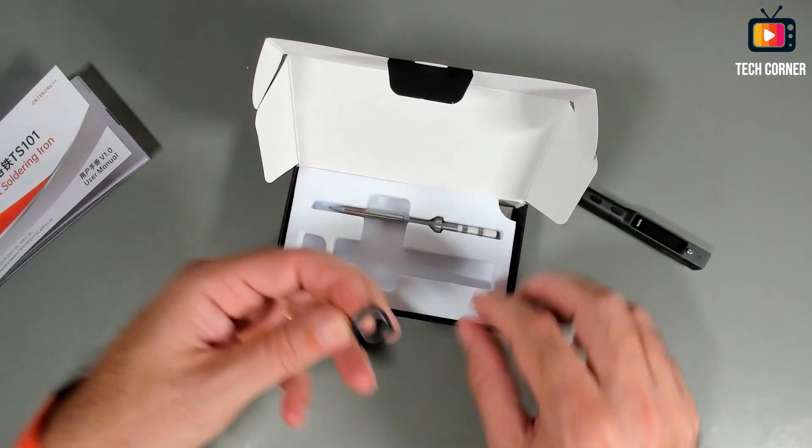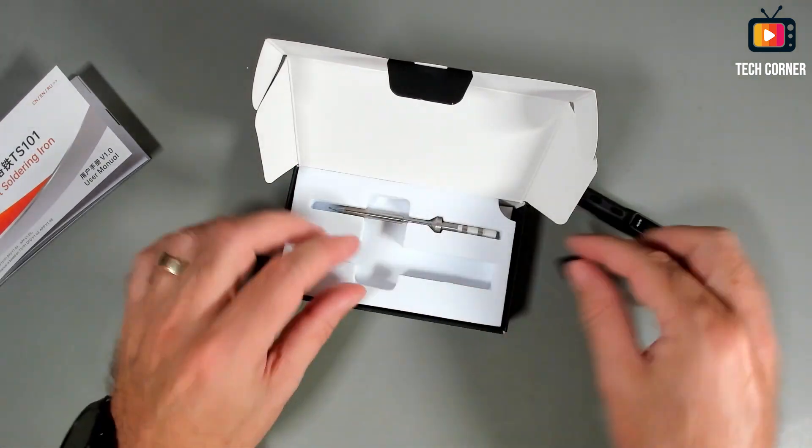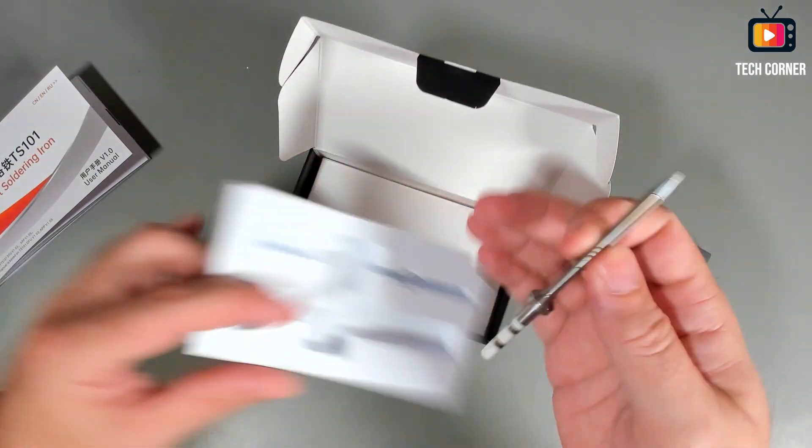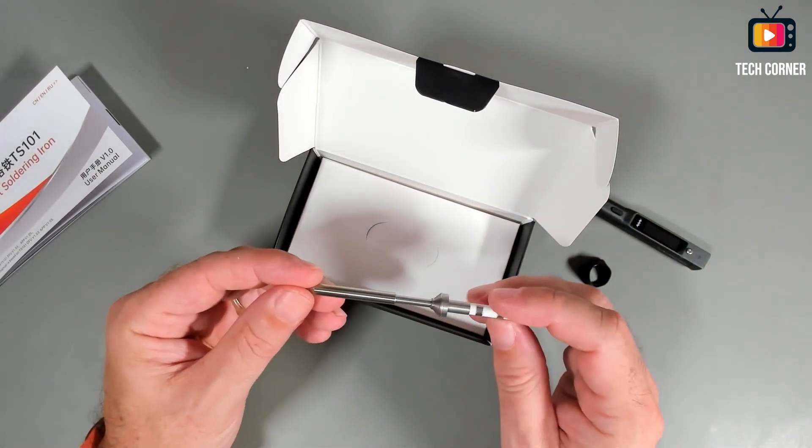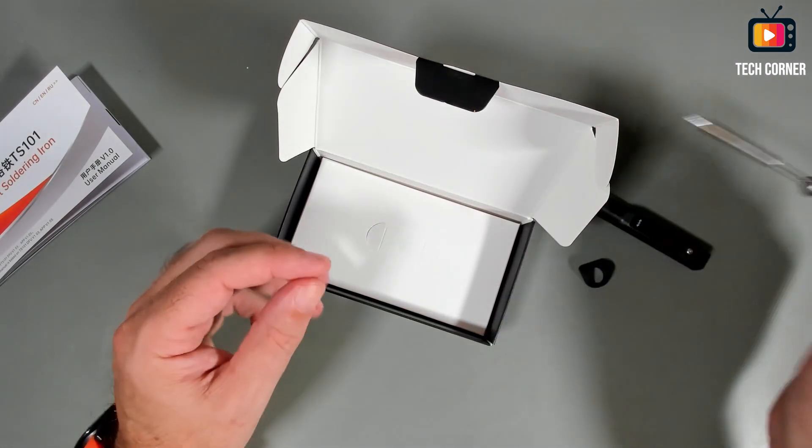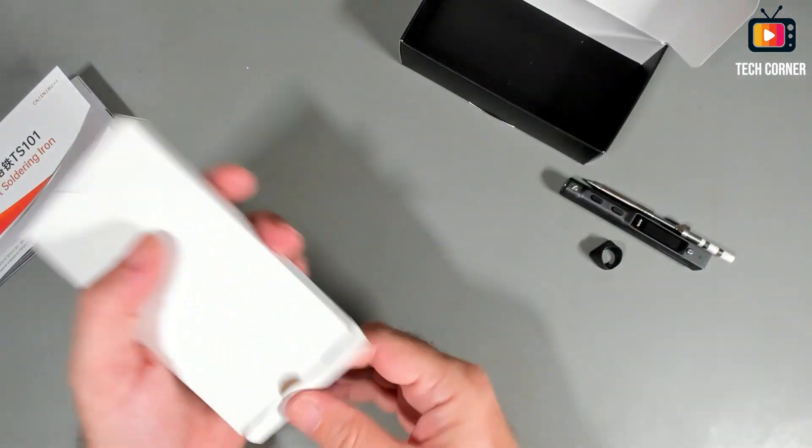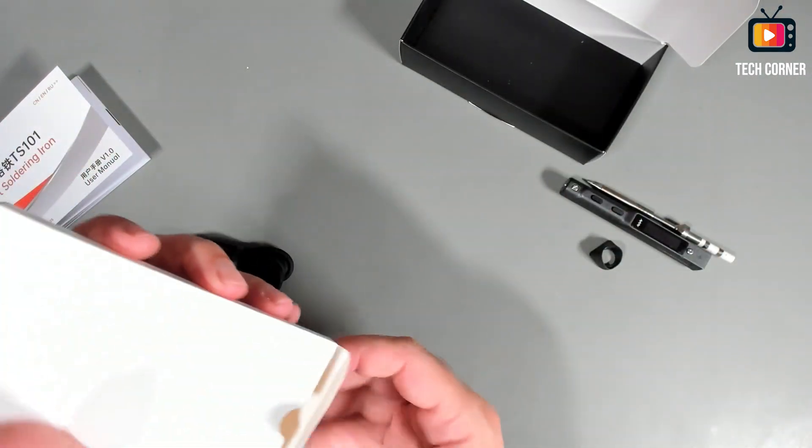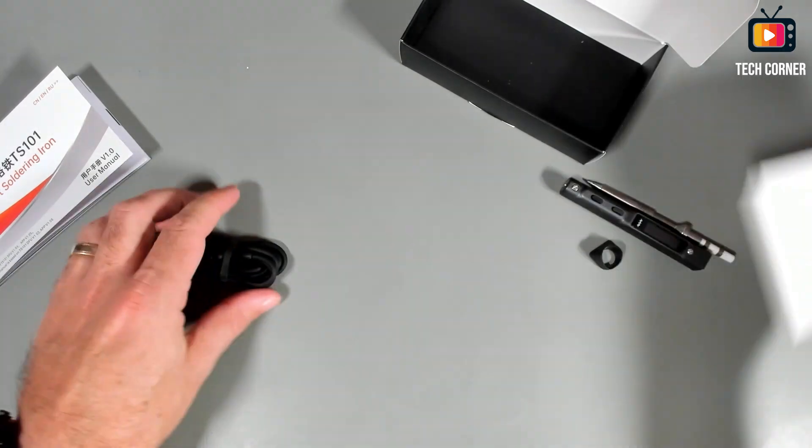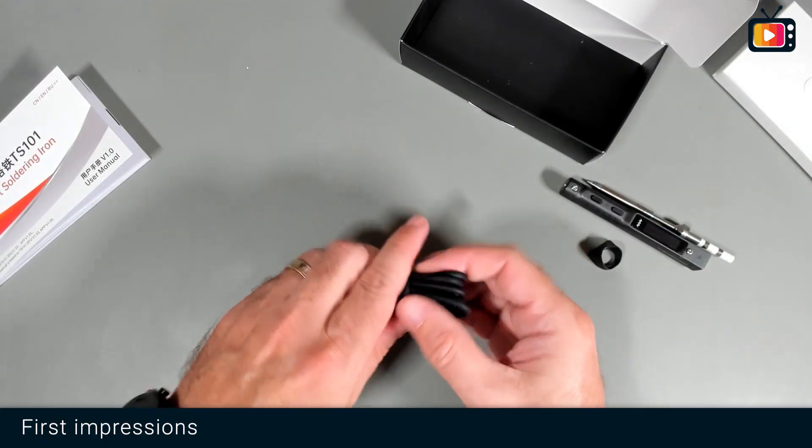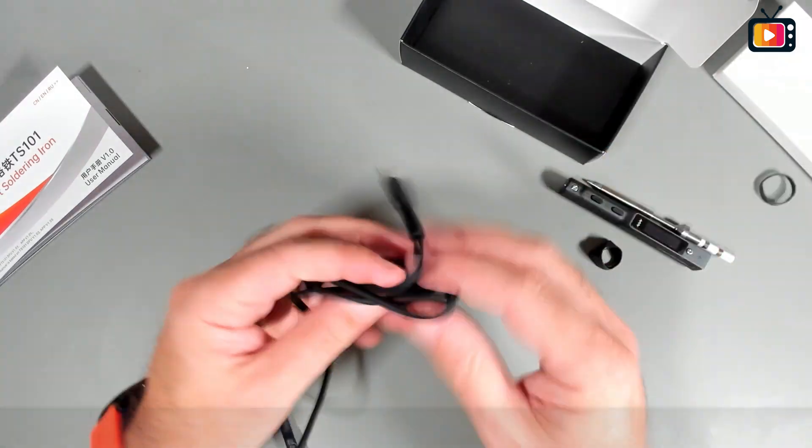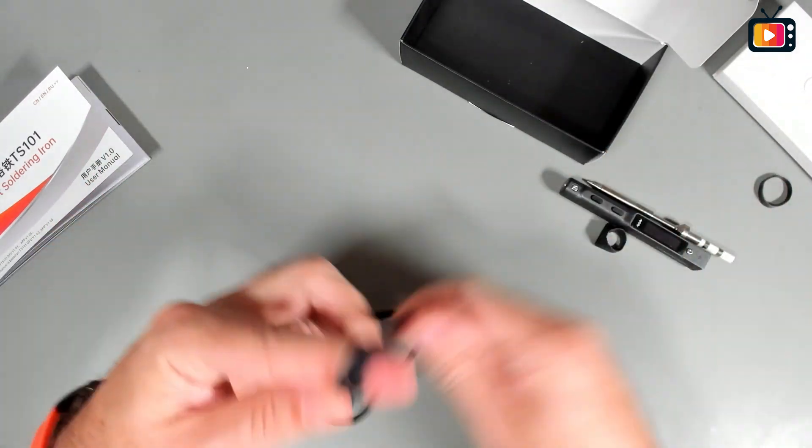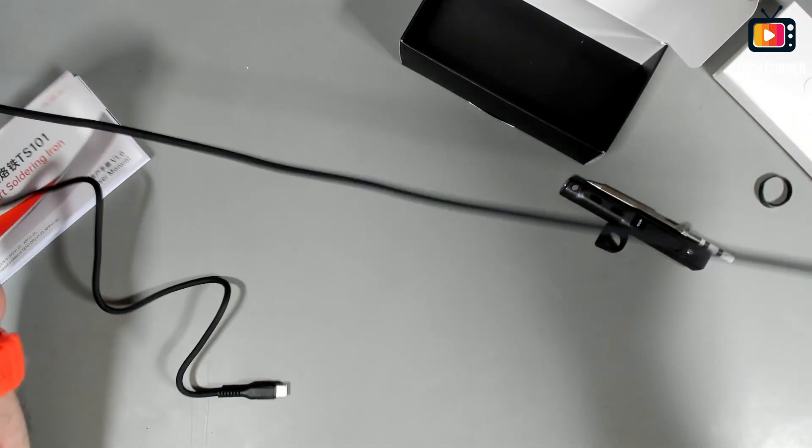We have in here the soldering iron. I think this is the anti-slip protection. And we have also a tip. I think the tip that is delivered is the B2, if I'm not wrong. Let's see what's in here. We have a cable. Let me take this out. A very nice cable, it's silicon. Very nice, very flexible.